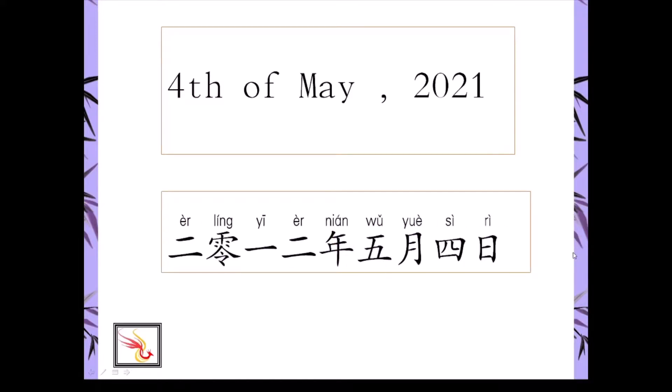Er ling er ling nián, er yuè, si rì — year first, then the month, and then the day.